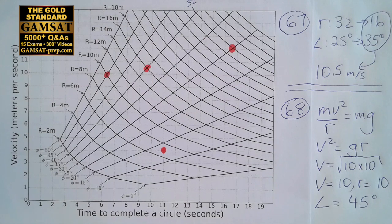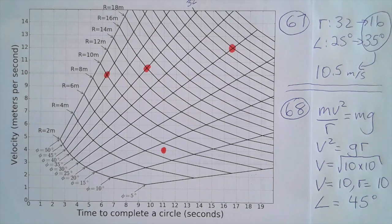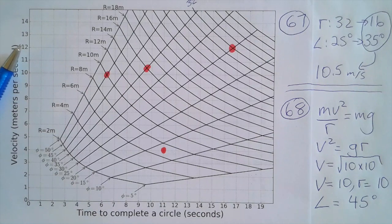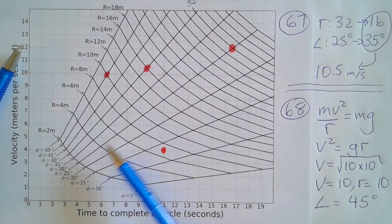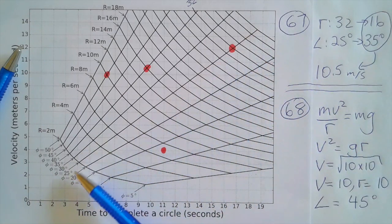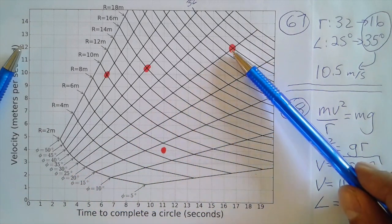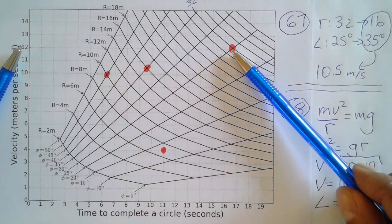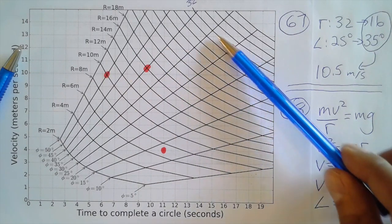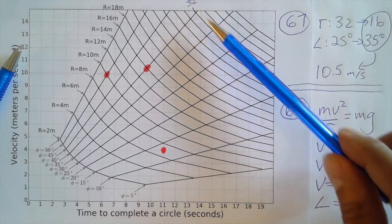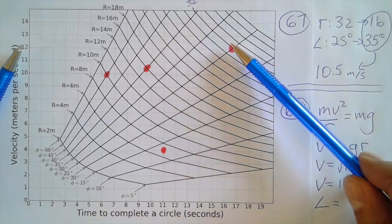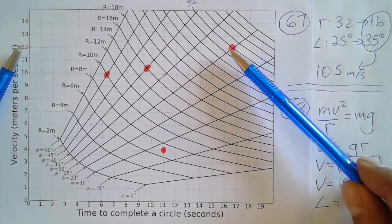The m's here are not masses, that's just in meters. We have the speed of the bird is 12 meters per second, and we are told that the angle of bank is 25 degrees. So 25 degrees is going to intersect 12 right here at this point. I just wrote in here at 32 - it's easier for you to read it on your graph in your ebook.